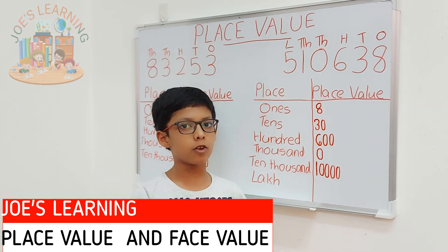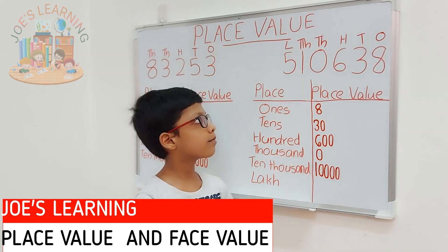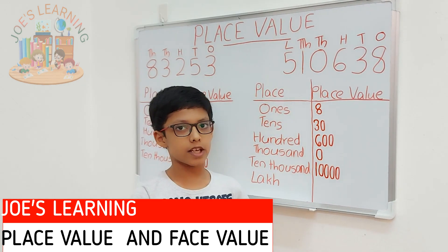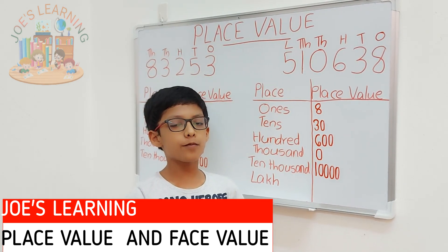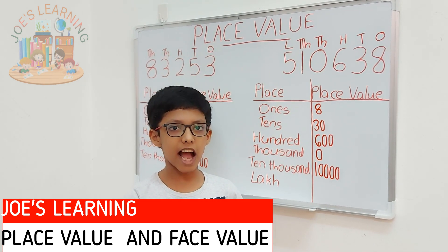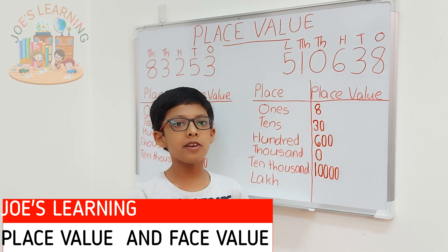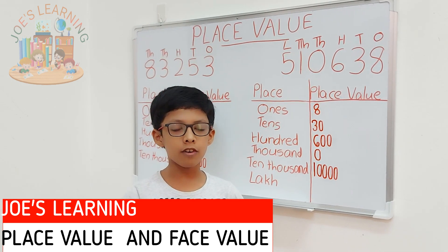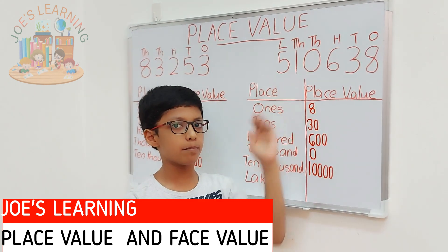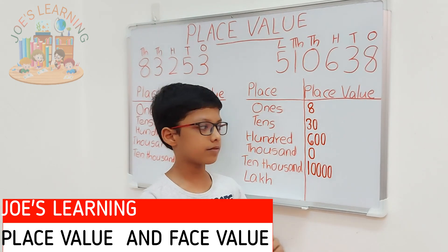Now, let's take a look at the lakhs place. 5 is in the lakhs place. So, 5 multiplied by lakh equals 5 lakh. So, the place value of 5 in this number is 5 lakh.